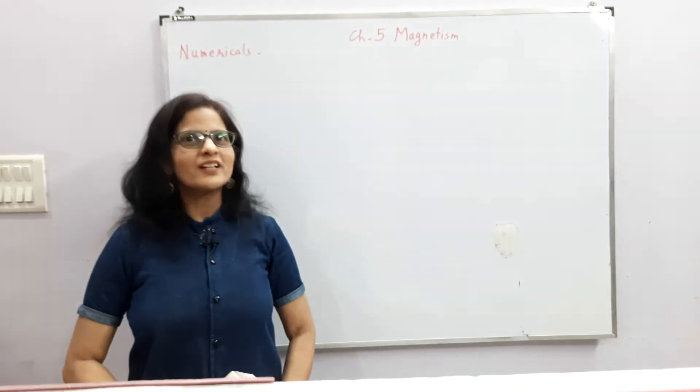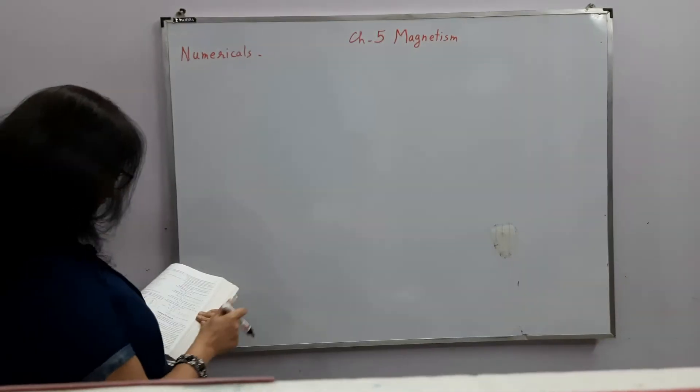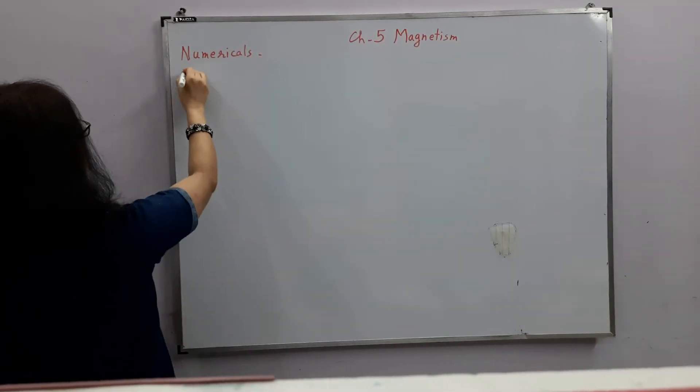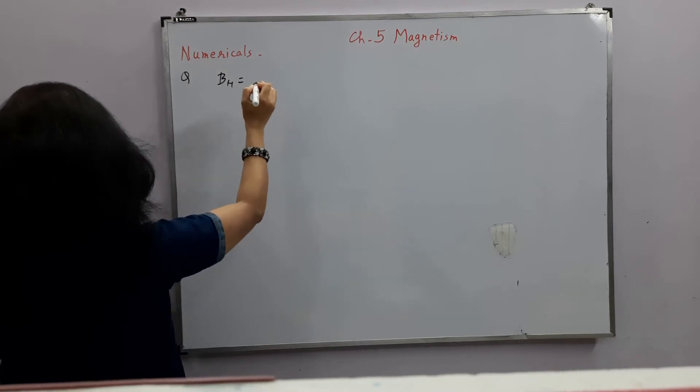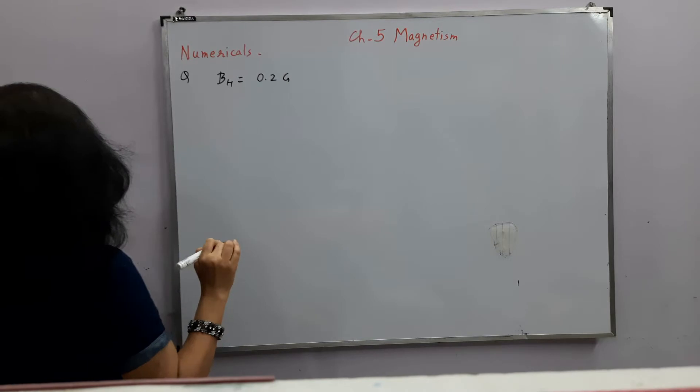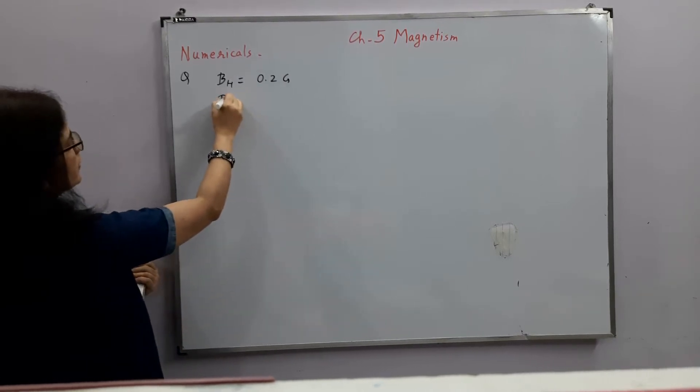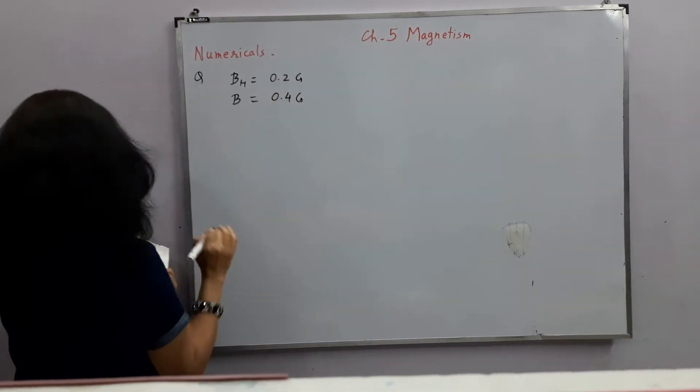Hello everyone, today we will discuss the numericals of magnetism. So it is given in the question that the horizontal component of earth's magnetic field is 0.2 Gauss and the total magnetic field is 0.4 Gauss.